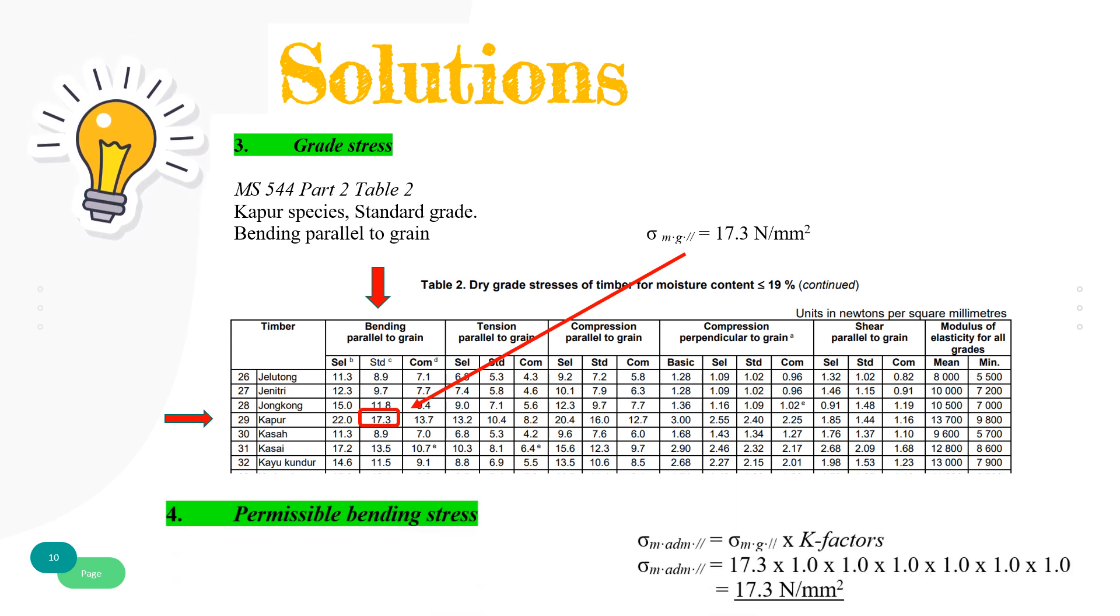The permissible bending stress is determined by multiplying grade stress by all modification factors, which becomes 17.3 N per millimeter square.